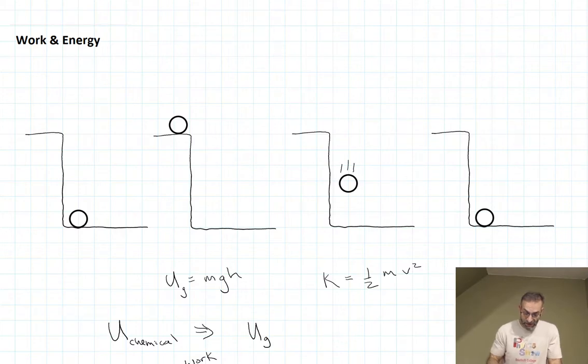And then when I gave it that little push, that gravitational potential energy became energy of motion, kinetic energy, because the force of gravity was doing work on the rock. In the first case, I did work on the rock. Now gravity is doing work on the rock.